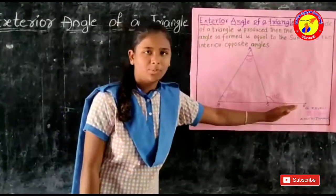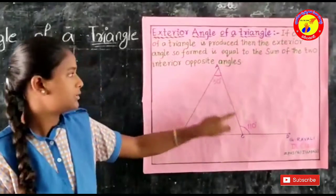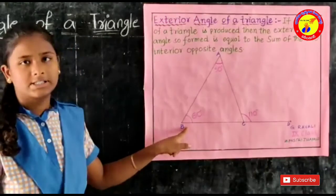If we produce a line DC up to point E, the exterior angle is formed and this angle is equal to angle A plus angle B. Here angle A is 50 degrees and angle B is equal to 60 degrees.